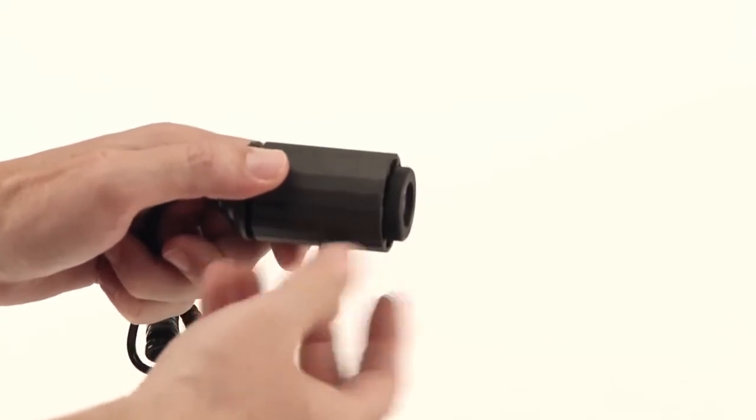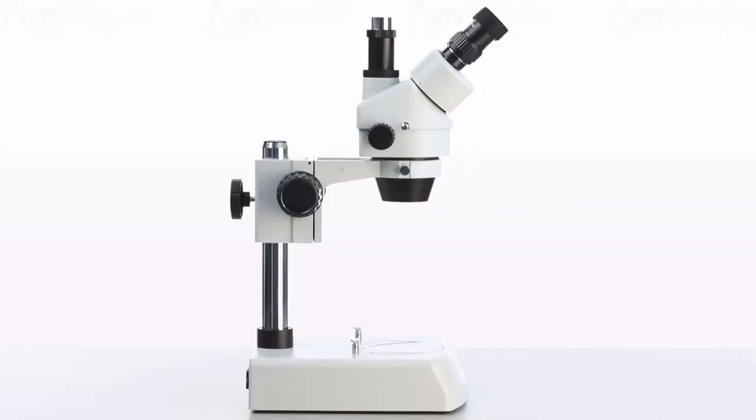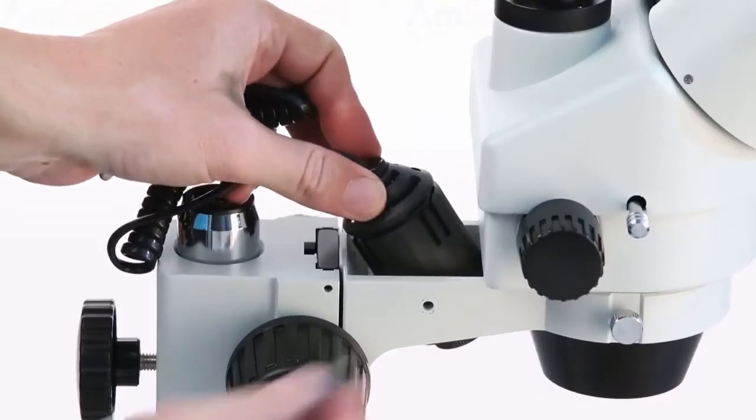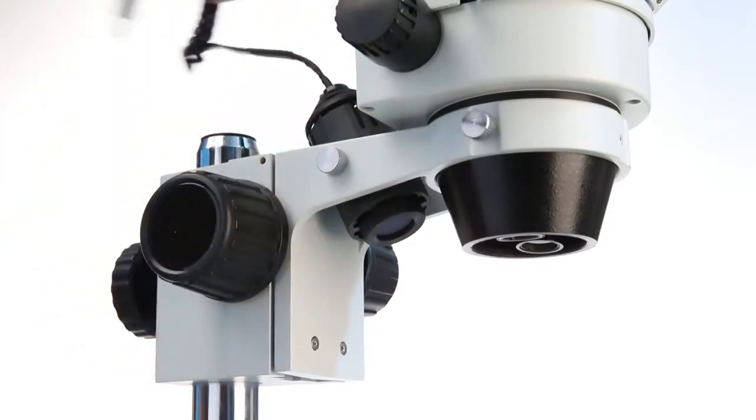Now we'll install the upper lighting module. Start by removing the locking screw. Insert the lighting module in the space behind the collar. Secure it with the light's locking screw. Then plug the power cord into the column's receptacle.